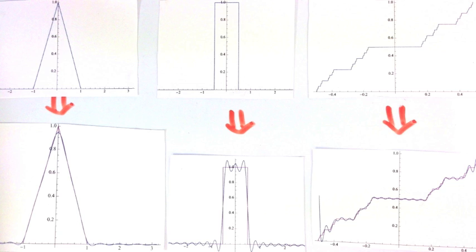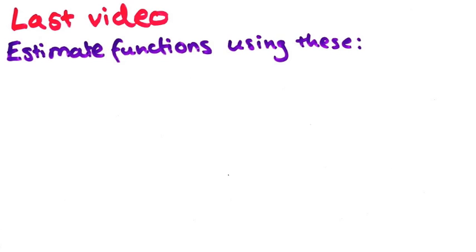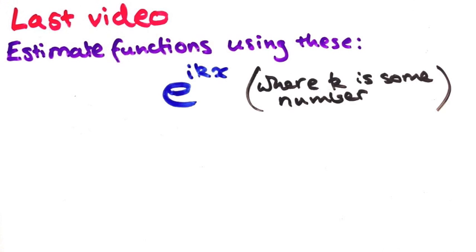In the last video, we talked about how the Fourier series can be used to estimate a lot of weird functions on an interval by just using functions of this form. We called these the complex exponentials.